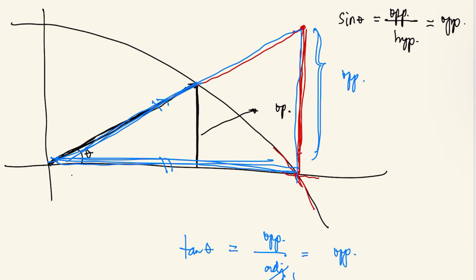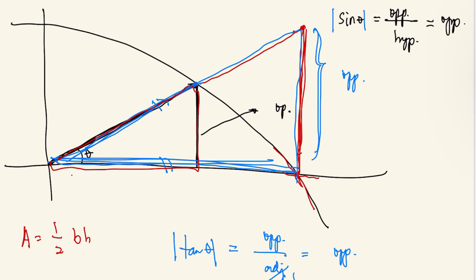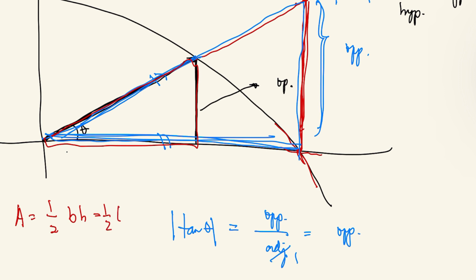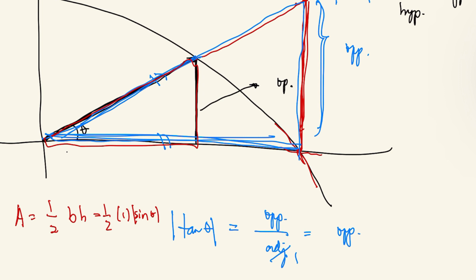How do we get the area of this smaller triangle? The area is one-half base times height. We know the base is 1, and the height is |sin θ|. So the area of the small triangle is (1/2)|sin θ|.